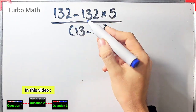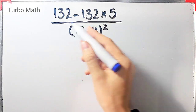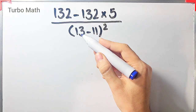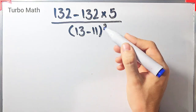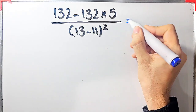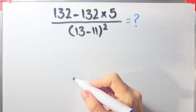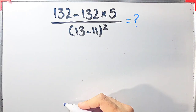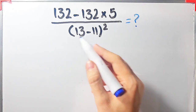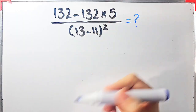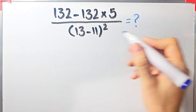132 minus 132 times 5 then over open parentheses 13 minus 11 closed parentheses then all of them to the power of 2 — what is the answer of this question? Hi friends and welcome to Turbo Math channel. In this video we are going to solve three questions about the PEMDAS rule. Let's solve this question step by step.